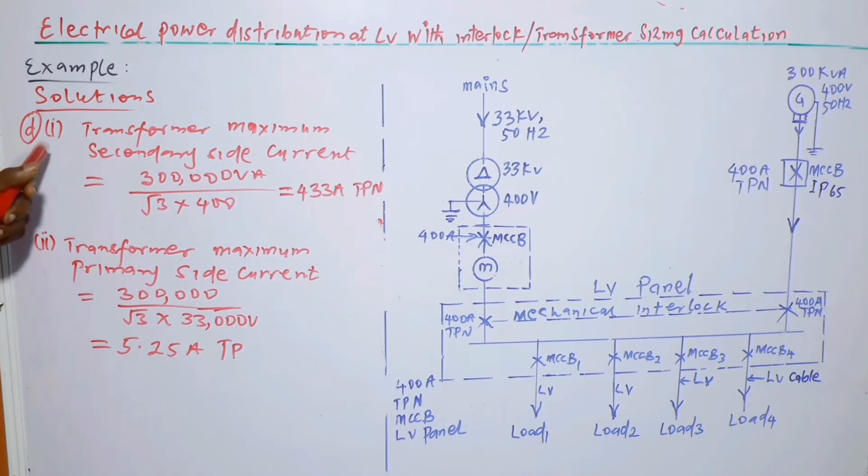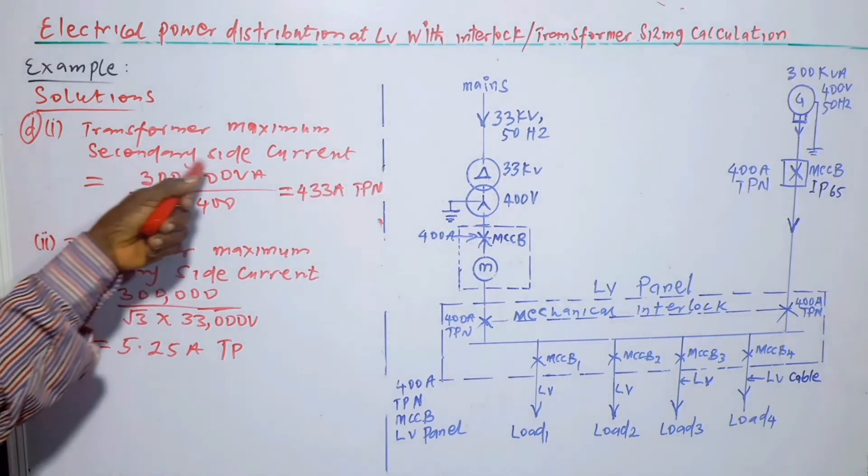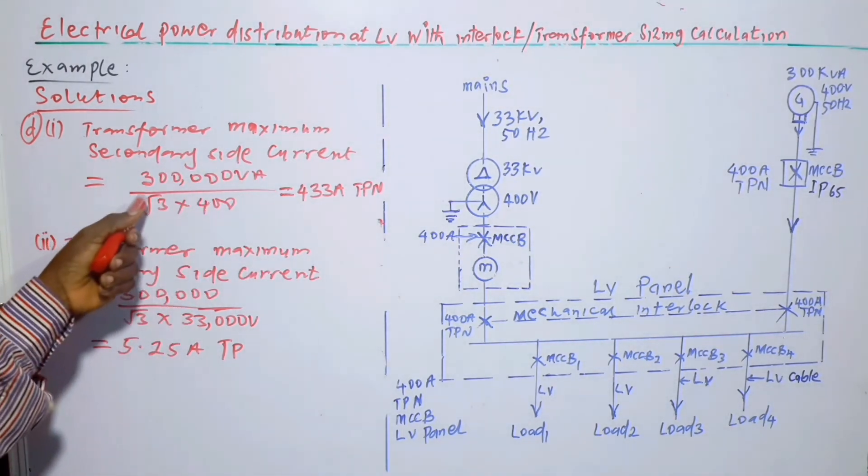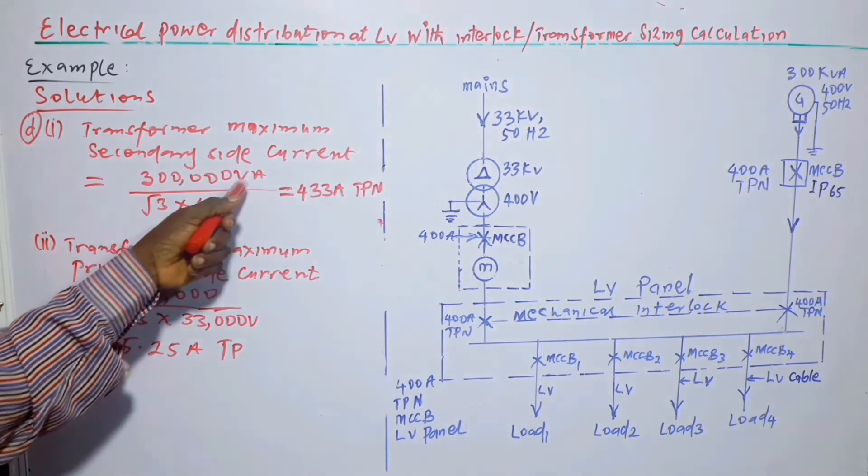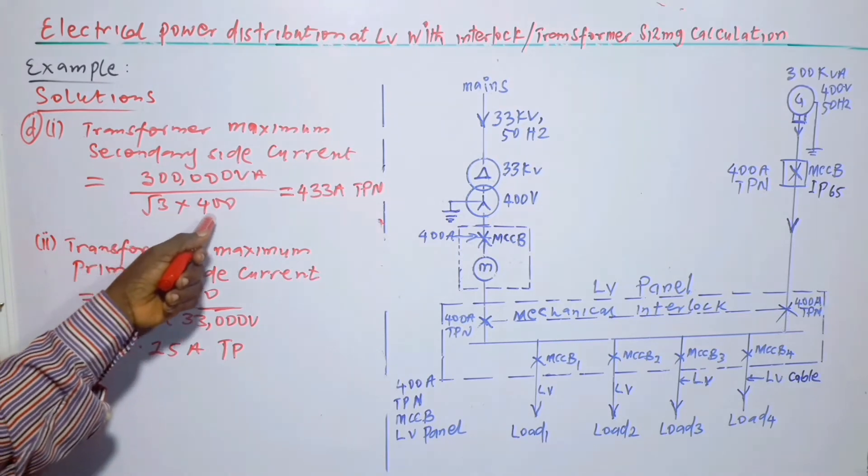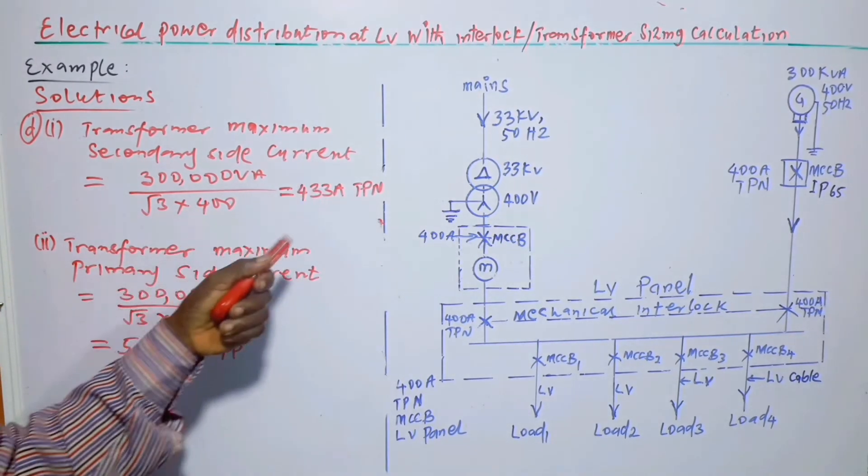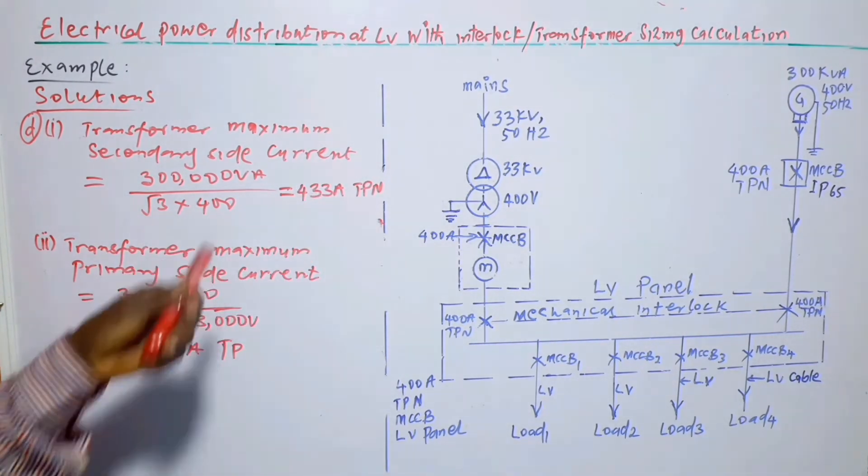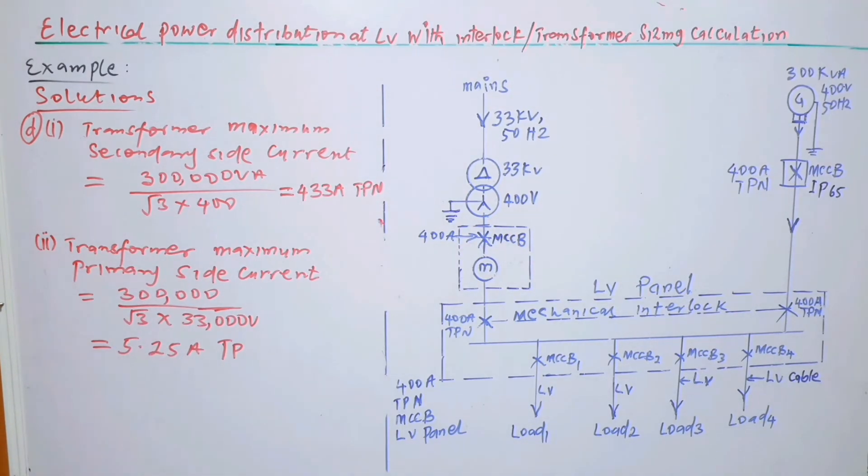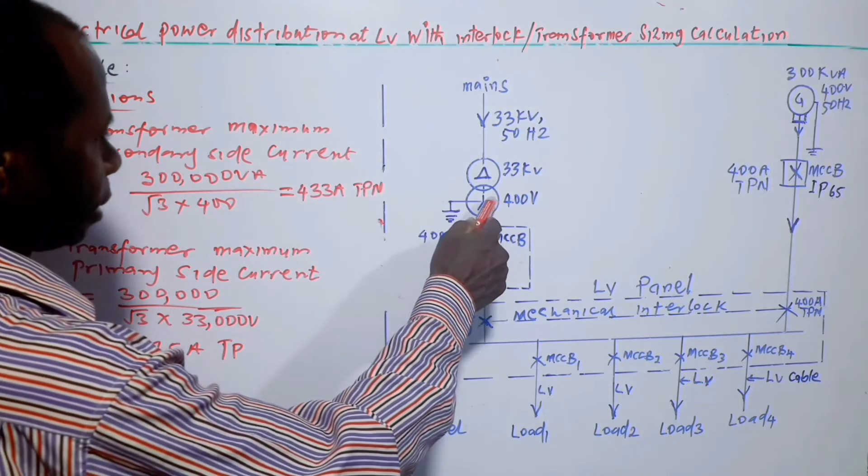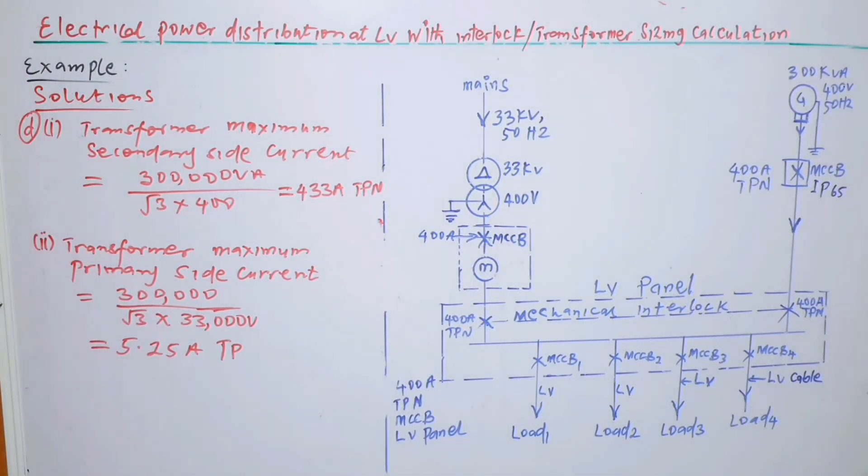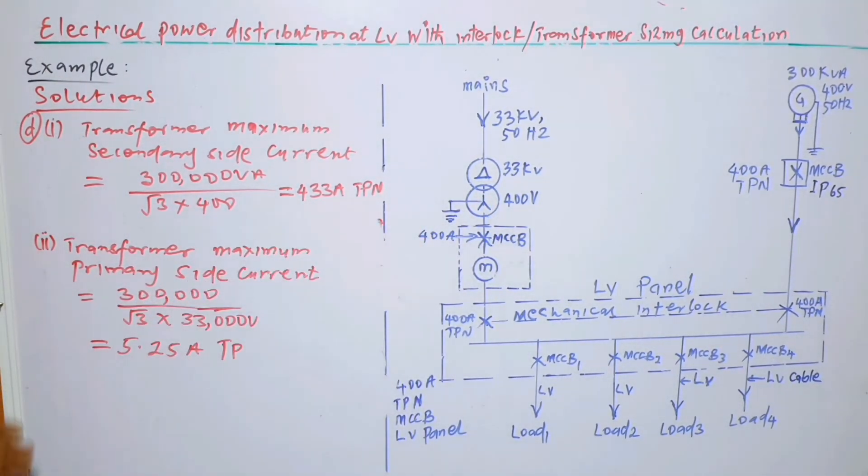One can move a step further by having the D part. D part one: Transformer maximum secondary side current is equal to 300,000 VA divided by root 3 times 400. And the answer is 433 TPN. We are talking of this star side, that's the secondary side.